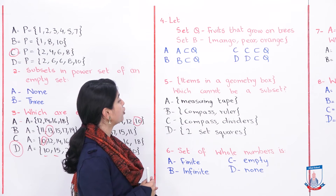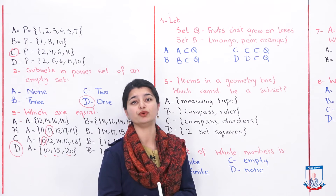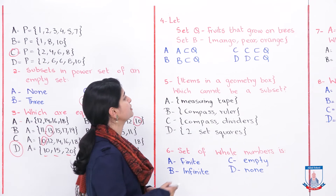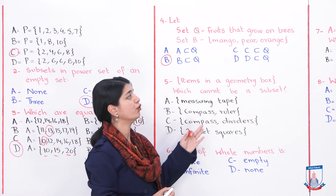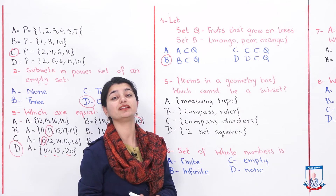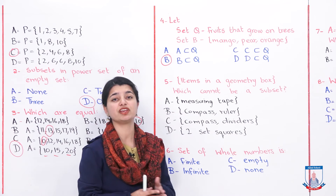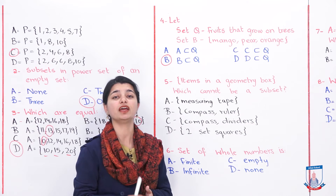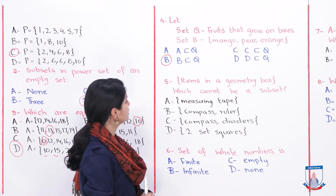Option A is not a proper subset of Q because it contains fruits that do not grow on trees. Option B is a proper subset of Q — mango, pear, and orange all grow on trees, so B qualifies. Options C and D also do not qualify because the fruits listed either are not tree fruits or are not fruits at all. Therefore option B is the correct answer.